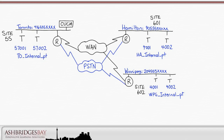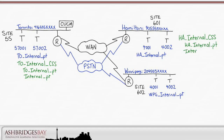We need site-specific partitions for HQ and each site — we already have the TO internal, HA internal, and WPG internal partitions. We also need a partition for dialing between sites: the internal partition. We'll have site-specific calling search spaces containing the site-specific internal partition first and the new internal partition second. These will be the TO internal CSS, the HA internal CSS, and the WPG internal CSS.